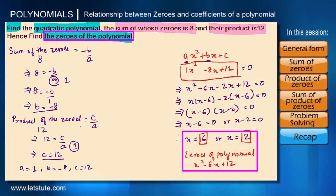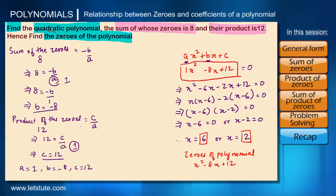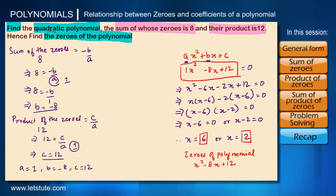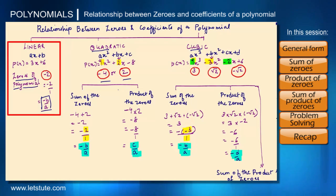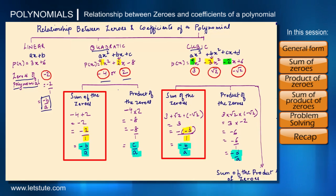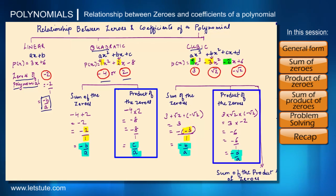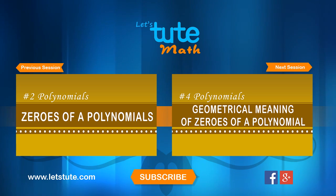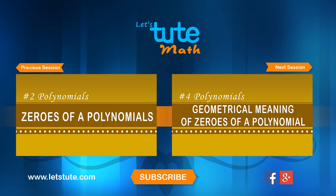So if we are given the sum and the product of the zeros and asked to find the polynomial and its zeros, this is how we solve it. Let's have a quick recap. Thank you.